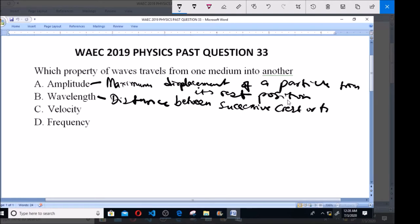What is velocity? Velocity is the distance traveled by the wave per second. Then frequency is the number of complete cycles.